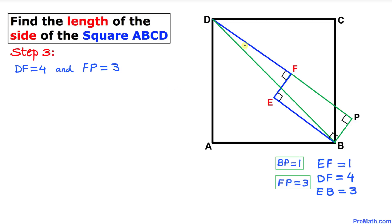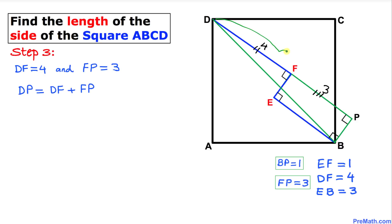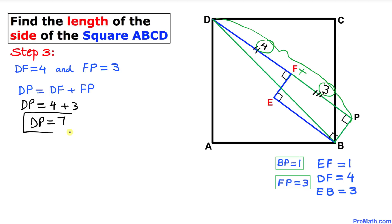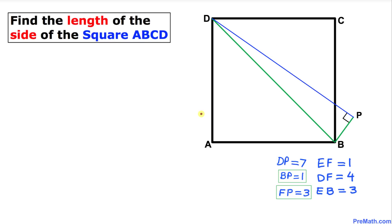Now let's focus on line segment DF, which is four units, and line segment FP, which is three units. The whole line segment DP is the sum of these two, so DP equals four plus three, which means DP is seven units.